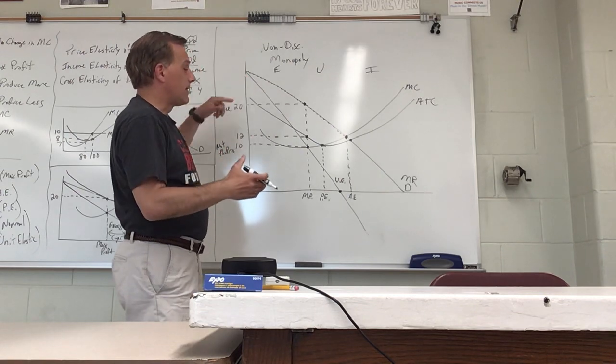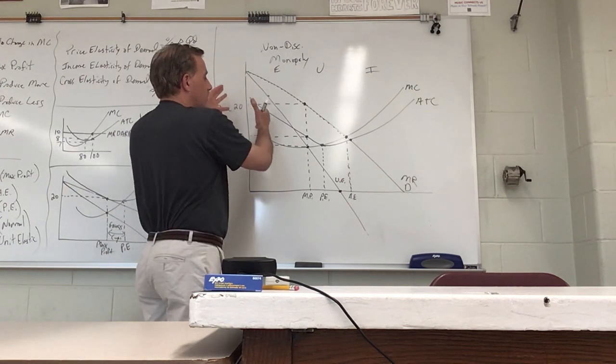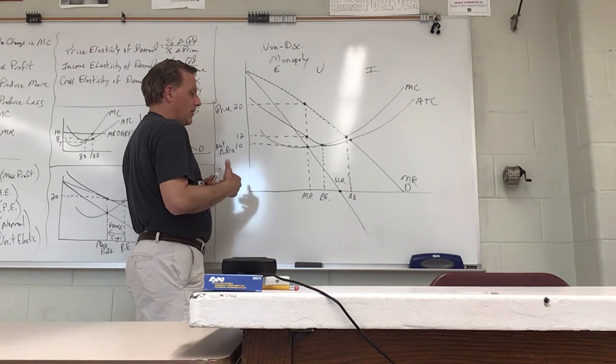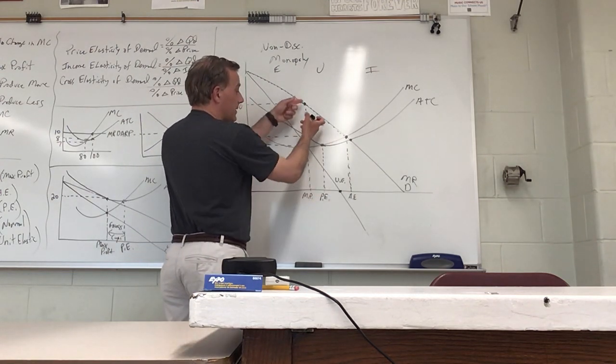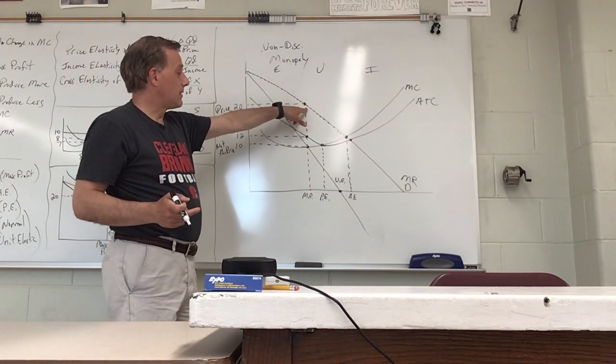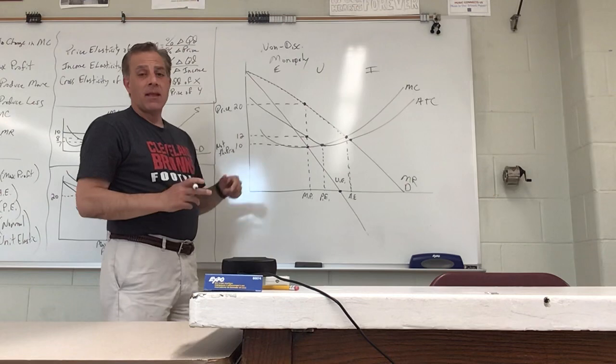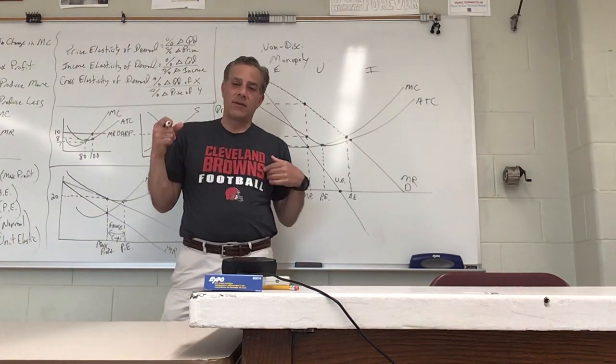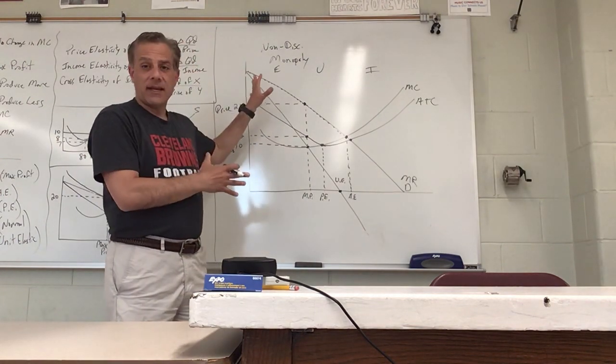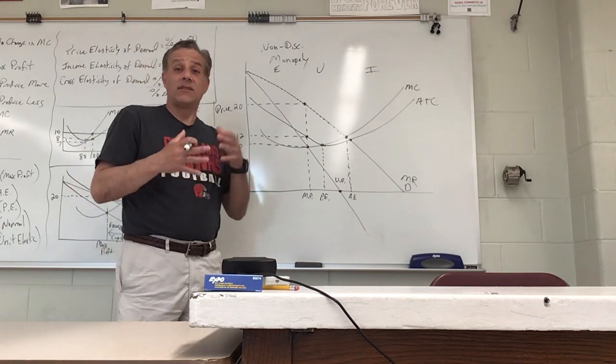This is the best situation for the monopoly because they're getting all this additional revenue - all the consumer surplus becomes producer surplus. The consumer does benefit in one way: more people are able to purchase, so this portion of the demand curve is able to purchase the good they weren't able to purchase before. If you see perfectly discriminating monopoly or single price non-discriminating monopoly, that's just a discriminating monopoly or regular monopoly - don't let things confuse you.